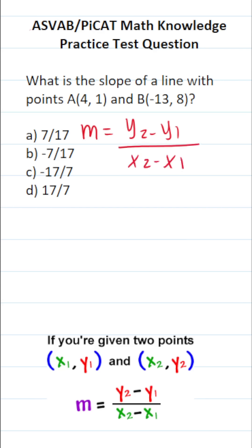Since you're not permitted to use a calculator or reference sheet on the actual ASVAB or PyCat, this is one of the formulas you absolutely need to commit to memory. Now all we have to do is identify X1, Y1, X2, and Y2 respectively.